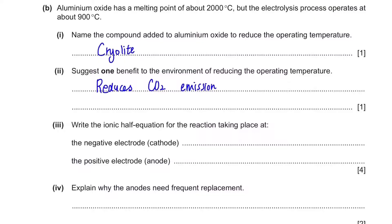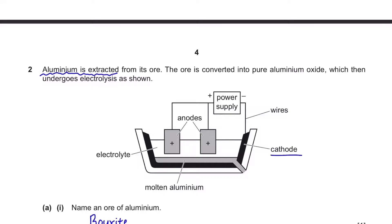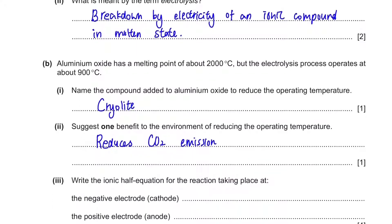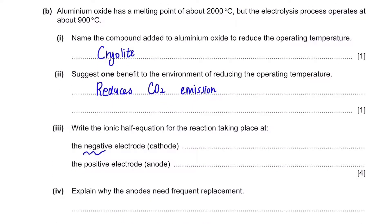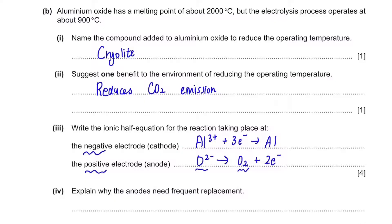Write the ionic half equation for the reaction at the cathode (negative electrode) and at the anode (positive electrode). The cathode attracts positive ions. The positive ion in aluminium oxide is Al3+, so the half equation is: Al3+ + 3e⁻ → Al. For the anode, it attracts negative ions. The negative ion is O2⁻. To produce O2 gas, we need two O2⁻ ions, giving: 2O2⁻ → O2 + 4e⁻.